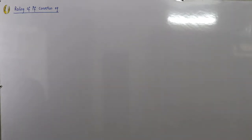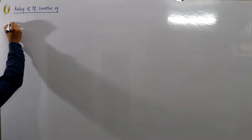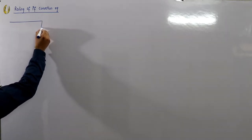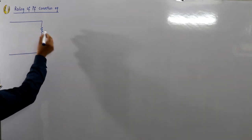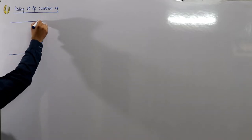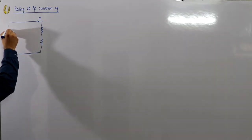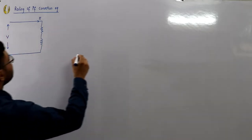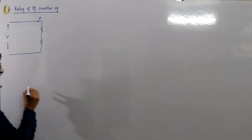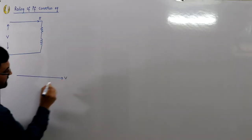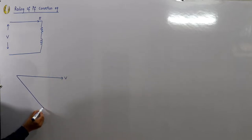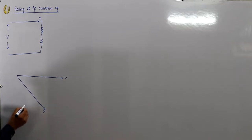I'll go according to the notations of the book. Let's say I have a load — an inductive load. This load has a current I and is connected across a supply voltage V. Since it is an inductive load, the current is lagging the voltage by an angle.